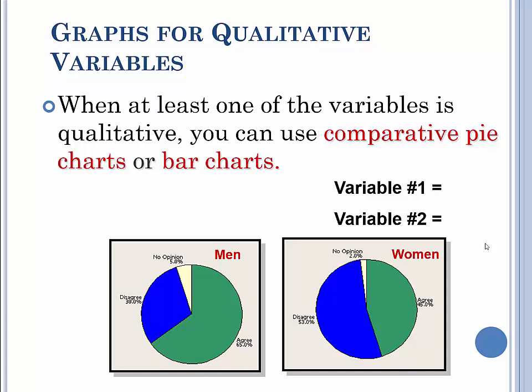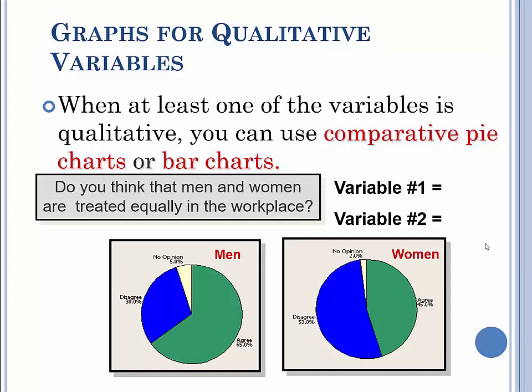For instance, variable one, variable two for this: We've got do you think that men and women are treated equally in the workplace? And you're basically asking them their opinions, yes and no. So you can see that that's qualitative data. It's not numerical. So you could just put it in a pie chart to show the ratios or percentages for each option: agree, disagree, or no opinion.